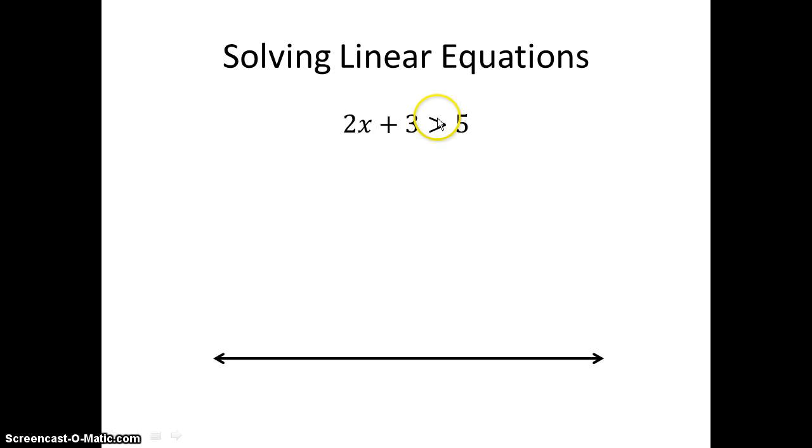So let's go ahead and solve them. The steps are the exact same thing, except, again, the multiplication and division of negatives. So I'll go ahead and subtract 3. Subtract 3. 2x is greater than 2. Divide both sides by 2. x is greater than 1. So if this is 1 on my number line, I do not have greater than or equal to. So just greater than, we have an open dot. And then any value greater than 1 will be the correct graphing of that.